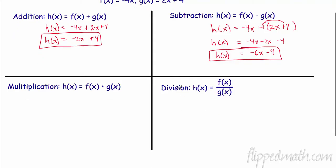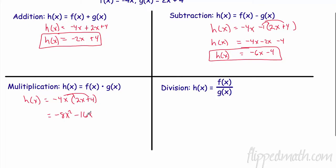Let's take a look down here — now we're going to multiply. So h of x, I'm going to multiply my f of x, which we know is negative 4x, times my g of x, which is 2x plus 4. Negative 4 times 2 is negative 8. x times x — I add exponents — 1 plus 1 is x squared. Negative 4 times 4 is negative 16, and I only have 1x. When I perform the multiplication operation on these two functions, I get negative 8x squared minus 16x.